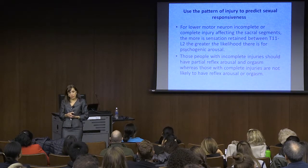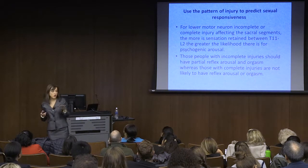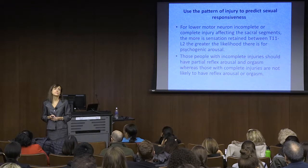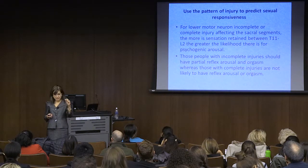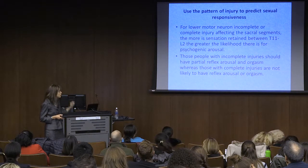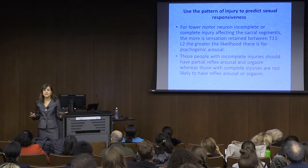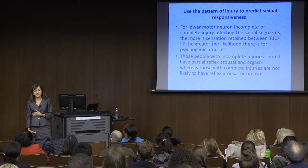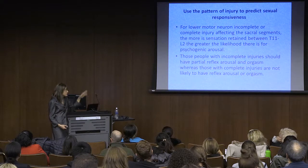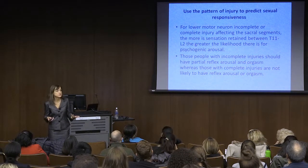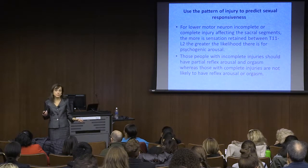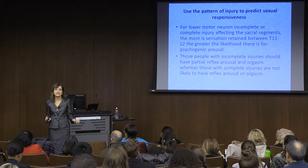For people with lower motor neuron injuries—those with cauda equina injuries, injuries below T12, or anterior cord syndromes where they injure the front part of the spinal cord—some don't have any reflexes. The same principle applies: the more sensation between belly button and pockets, the more chance there is for psychogenic arousal. Incomplete lower motor neuron injuries give potential for orgasm, but complete lower motor neuron injuries are less likely to result in orgasms.